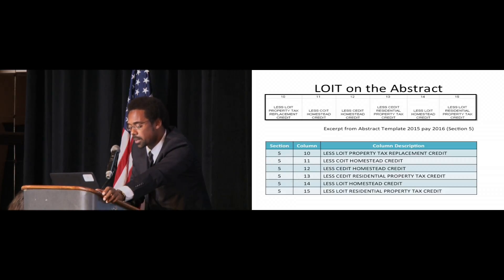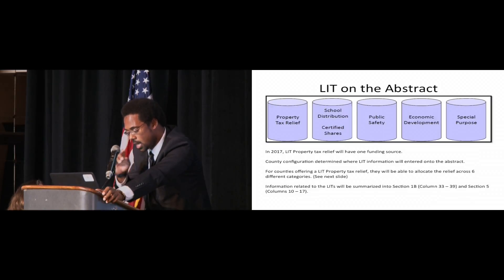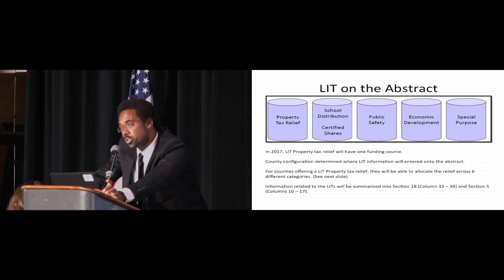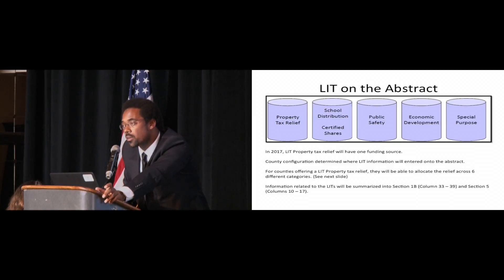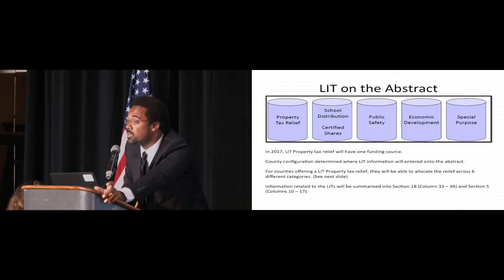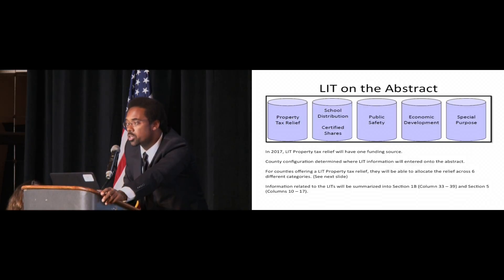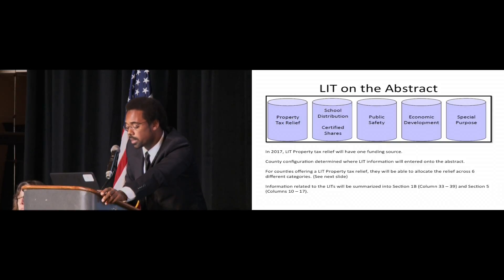In Section 5, we needed a way to show the net values for the homestead that would be included in columns 33 or 34. By comparison, in 2017 there will be more than just those three options — we're up to six options for how, once you have your property tax relief, it will be applied. The inclusion of those new options means we needed new places on the abstract to house those values, and that is the largest difference between what the abstract looked like last year and what it will look like this year.